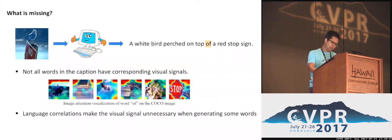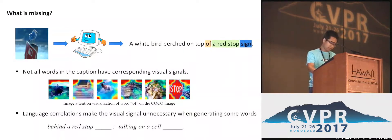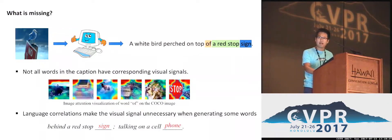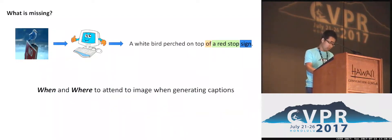We also find that language correlation makes the visual signal unnecessary when generating some words. Given the phrase 'behind a red stop,' we can easily predict the next word to be 'sign,' even without looking at the image. Therefore, we need a module that can both decide when and where to attend to the image when generating captions.